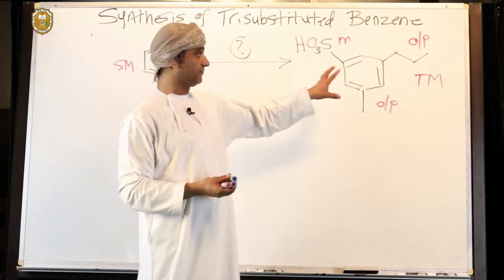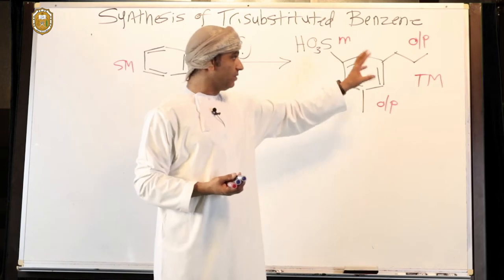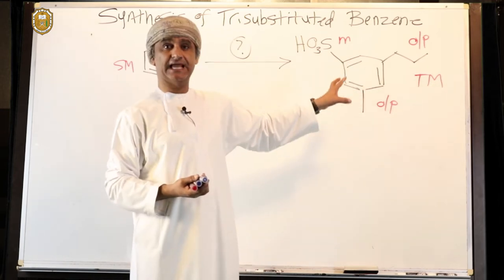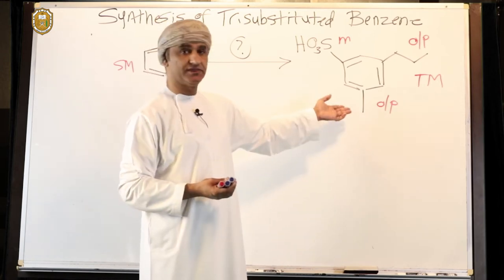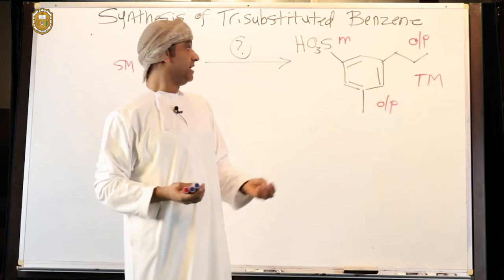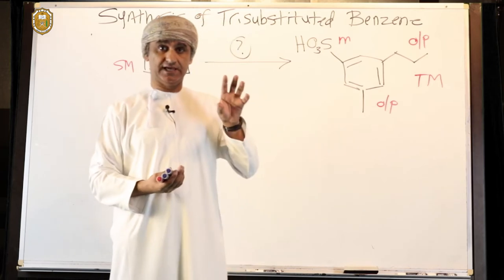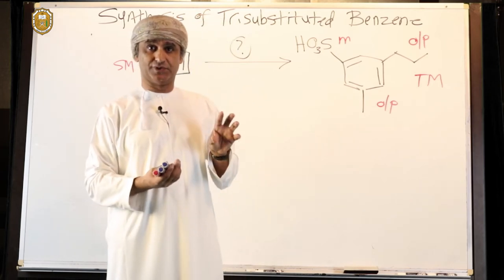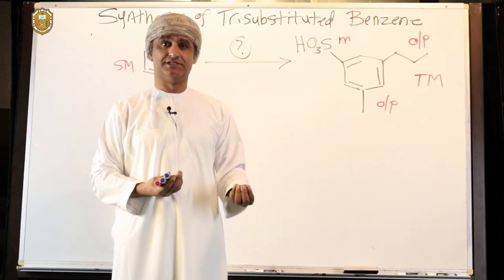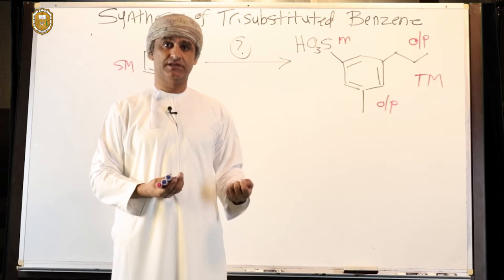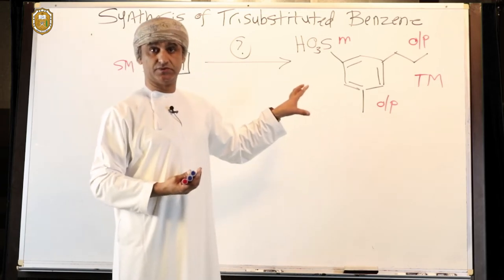This is something very important. We know not only the orientation we should look at, but also the activity — whether these groups are activating or deactivating. The propyl group is an activating group. This methyl group is also an activating group. The sulfonyl group is a deactivating group. Activation versus deactivation can dictate the order of steps. It's always beneficial to start with a more active benzene in order for the synthetic route to be more efficient.